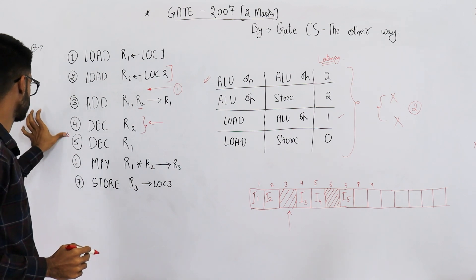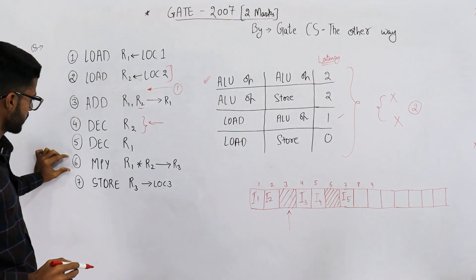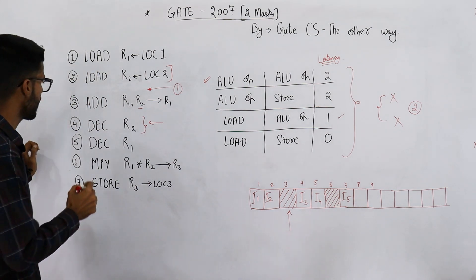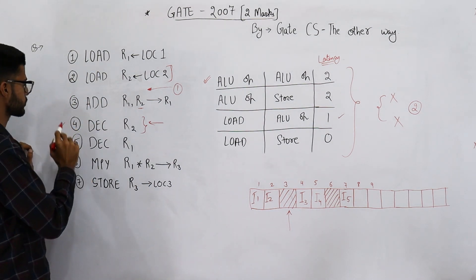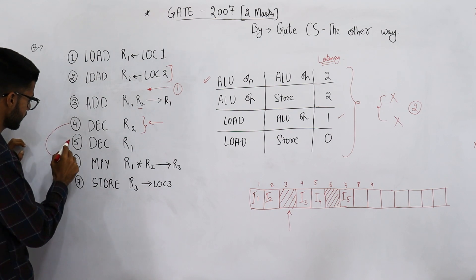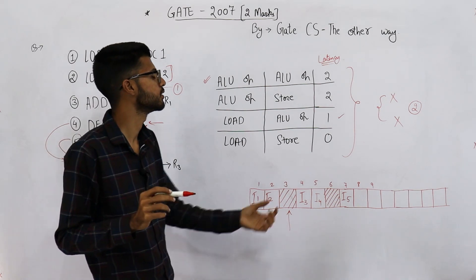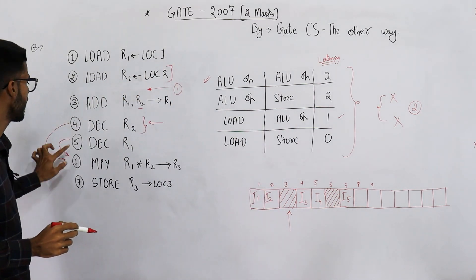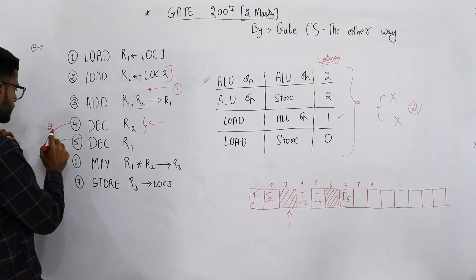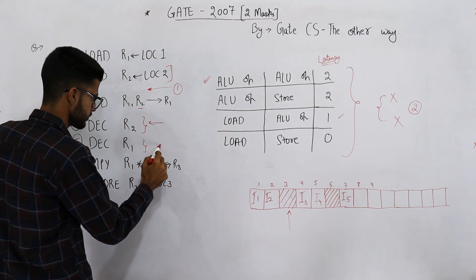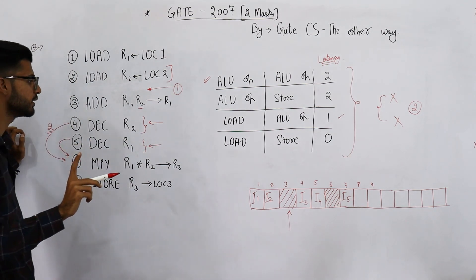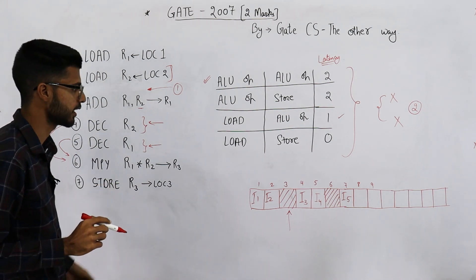Instruction six uses R1 and R2 as operands. R1 is produced by instruction five, and R2 is produced by instruction four — all three are ALU operations. There are two dependencies: four-to-six and five-to-six. For the four-to-six dependency, a latency of two is required. One clock cycle is already covered by executing instruction five, so only one additional stall clock cycle needs to be added separately.